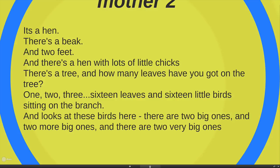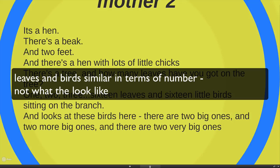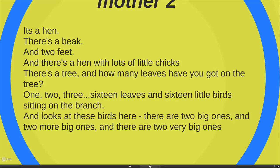So not only is she working with the situation where she's working with the whole of something like a hen and breaking it down into its parts, she's also starting to show how you can compare different kinds of things in terms of their numbers and see how they can be similar in terms of numbers, in terms of how many there are. So she's starting to work in an abstract world. And she does it again when she says, look at these birds here. There are two big ones and two more big ones. And there are two very big ones. She's starting to work with size, the abstract concept of size.